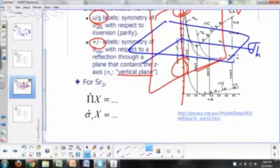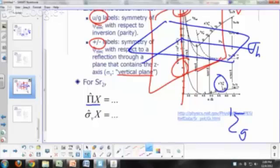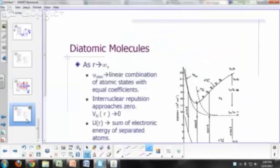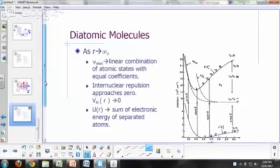So in the case of strontium, what is the inversion through, what's the result of inversion? What was Sr2? What did we have? It's a singlet sigma G plus. It's gerade, so symmetric. We'll just give you X. Sigma V, reflection through the vertical plane. It's a plus, so it's symmetric, so it will just give you back the same function.